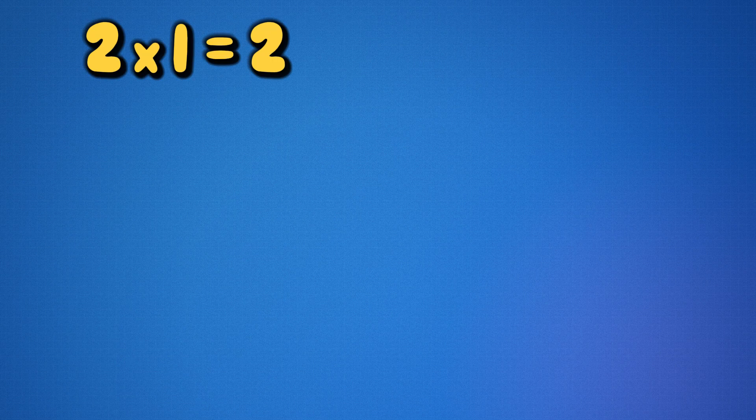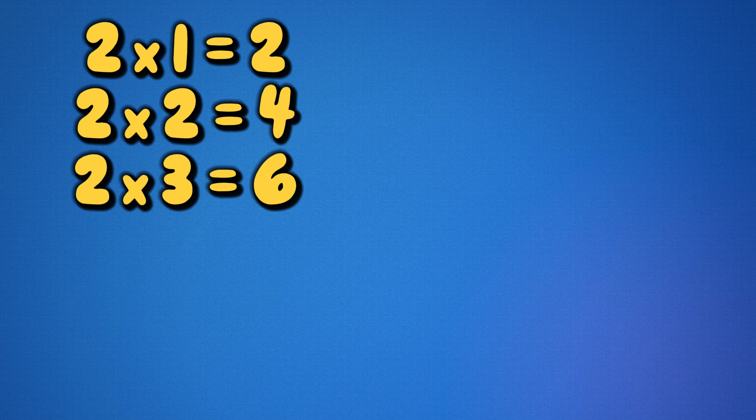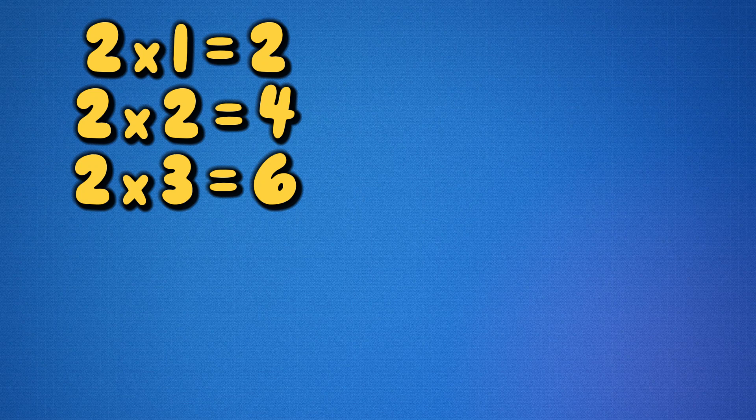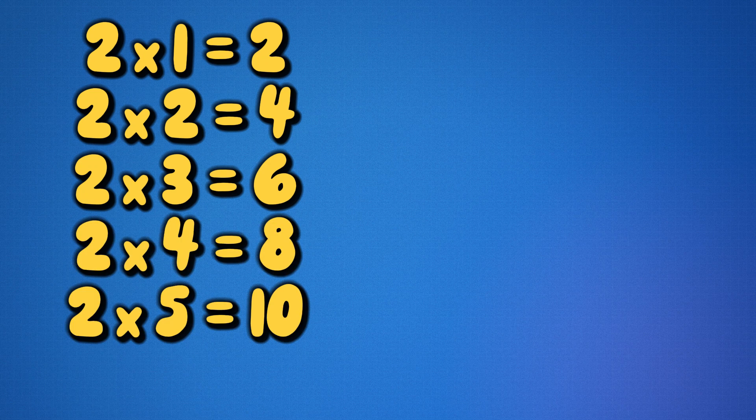Let's look at all the multiples of two. Then I'll have you practice some on your own. Two times one is two. Two times two is four. Two times three is six. Two times four is eight. Two times five is ten. Two times six is twelve.